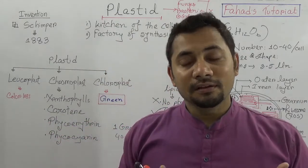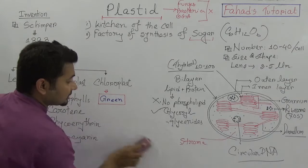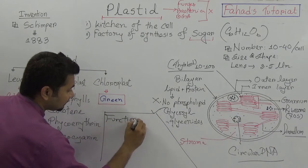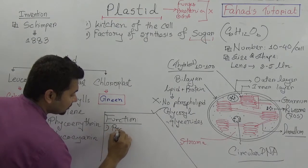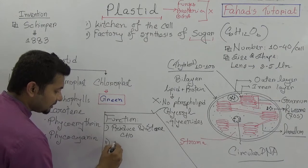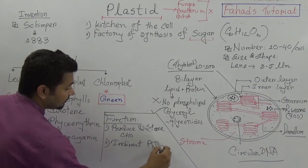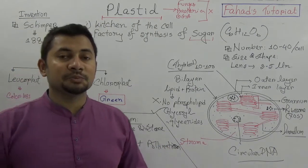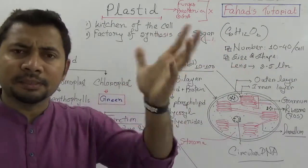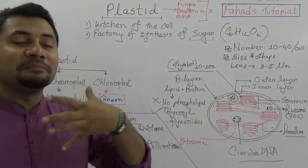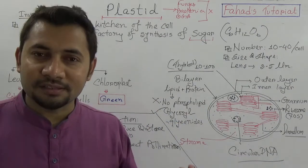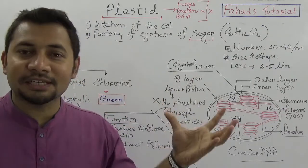The two main functions of the plastid are: number one, to produce and store carbohydrates (food); and number two, indirect pollination — the colors produced by chromoplasts attract insects, honeybees, and birds, which then carry pollen from flowers, indirectly causing pollination. This is part of the beauty of nature and the creativity of the Almighty.